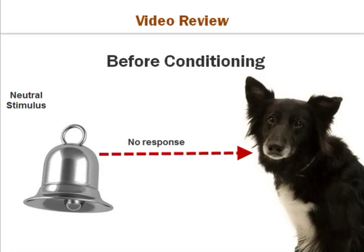When Ivan Pavlov did his experiment with dogs, he noticed them salivating before food was even presented. The dogs had learned to associate the lab assistant's approaching footsteps with eating. When Pavlov observed this, he realized that we learn to associate a neutral stimulus — such as a bell — with an unconditioned stimulus that produces an automatic natural response, such as food for dogs. The crucial stage of this process involves repeated pairings of the two stimuli.